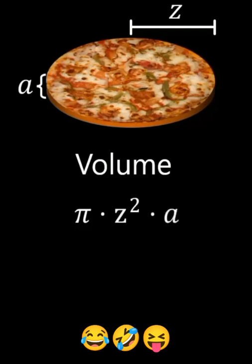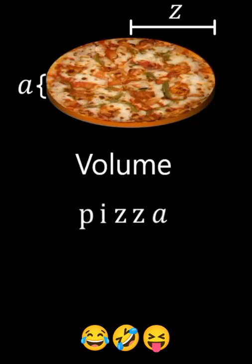z squared is equal to z multiplied by z, and we can write out pi as pi. Thus the volume of pizza is pizza.